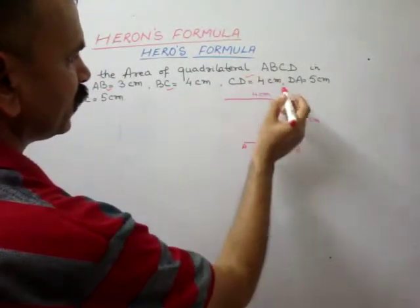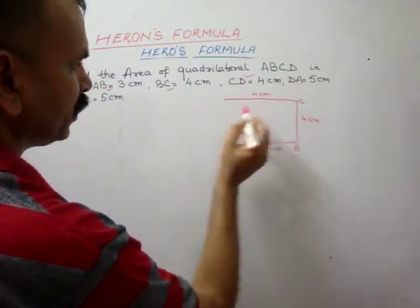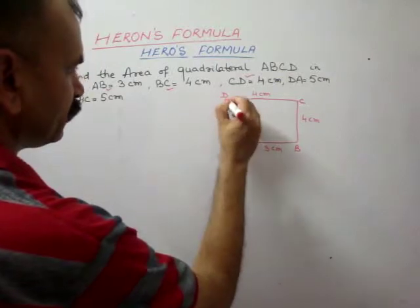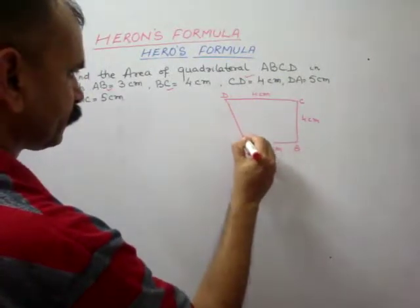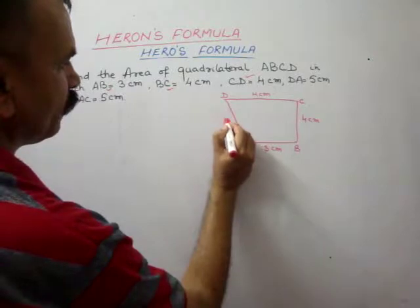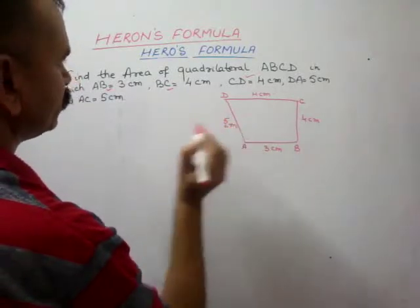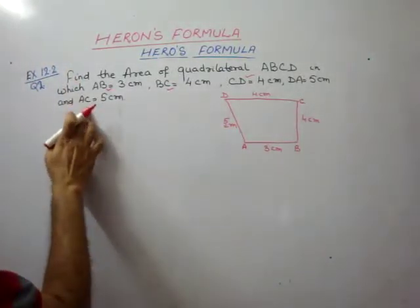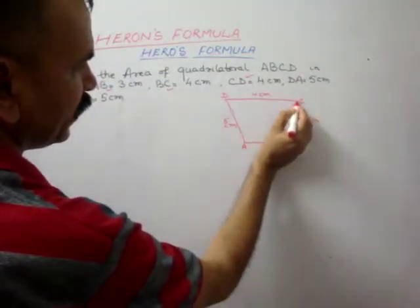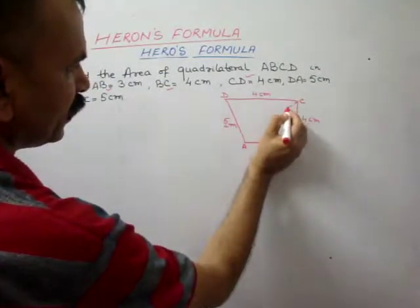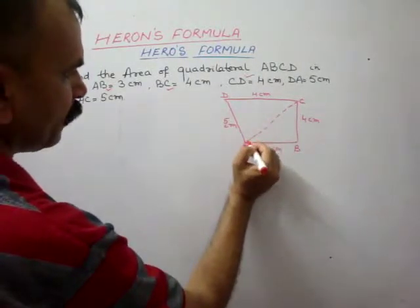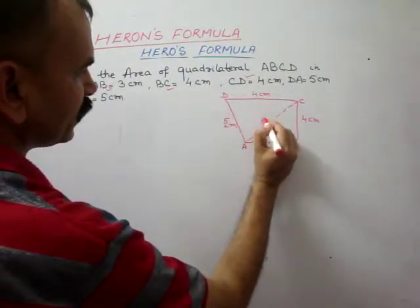Next, DA is 5 cm — from D to A is 5 cm. And AC is 5 cm — this diagonal from A to C is also 5 cm.